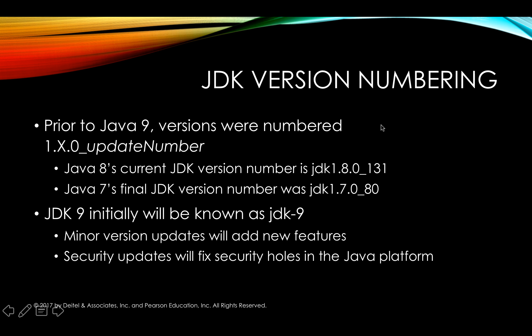Before we get to those steps, I want to talk a little bit about JDK version numbering, which has changed as of Java 9. Prior to Java 9, each version of the JDK was typically numbered 1.JDKVersionNumber.0, followed by potentially an underscore and some update number. For example, at the time of this recording, Java 8's current version number is JDK 1.8.0_131. And similarly, JDK 7's last update was JDK 1.7.0_80.